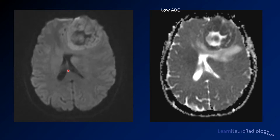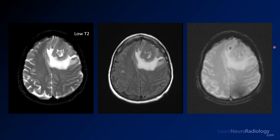On the MRI diffusion sequence, you look at the rim of this mass — it's pretty bright on DWI, and on ADC it's even lower. So you definitely have some concerns that there's tightly cellular material there. On T2-weighted images you see a thick rim that is quite dark — darker even than white matter. Surrounding edema is confirmed on FLAIR with fluid suppression.